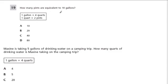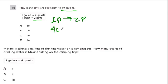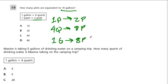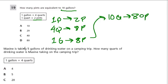How many pints are equivalent to ten gallons? One gallon is four quarts and one quart is two pints. Every one quart has two pints, so if we have four quarts we have eight pints. That's how many are in a gallon — one gallon has eight pints. So ten gallons will have ten times as many pints: 80 pints. Our answer is D.